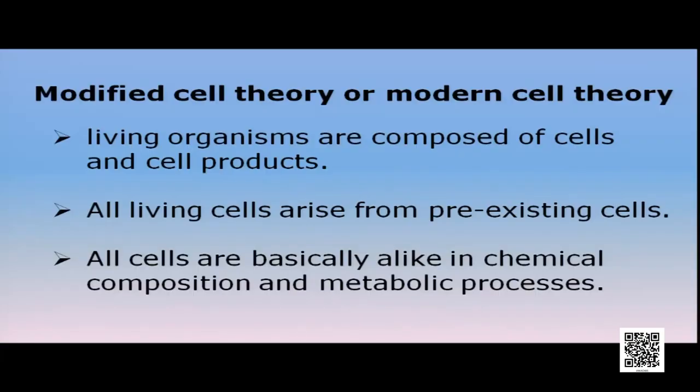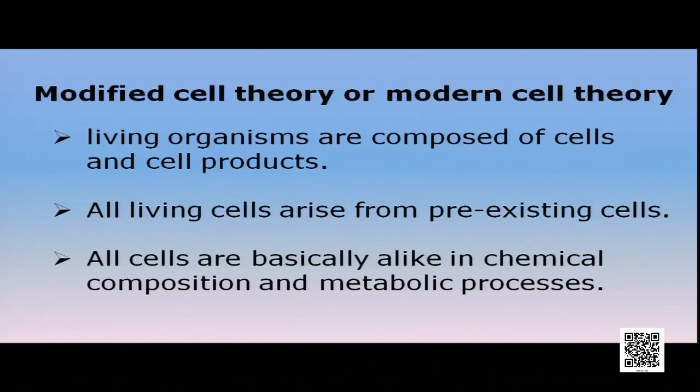The modified or modern cell theory states: living organisms are composed of cells and cell products; all living cells arise from pre-existing cells; and all cells are basically alike in chemical composition and metabolic processes — no matter what the function or structure of the cell, all cells are similar in composition and metabolic processes.